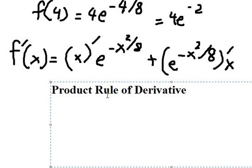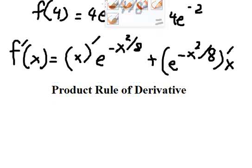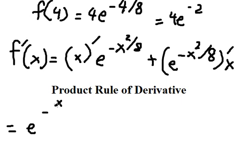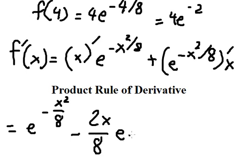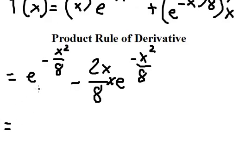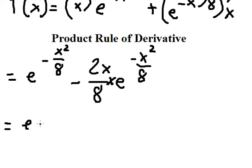So in this situation we have e to the power of negative s squared over eight, and this term gives us negative two s over eight times e to the power of negative s squared over eight, multiplied by s. We can apply factorization here.